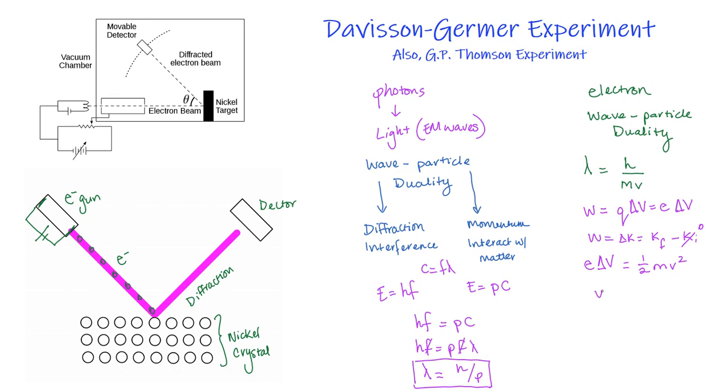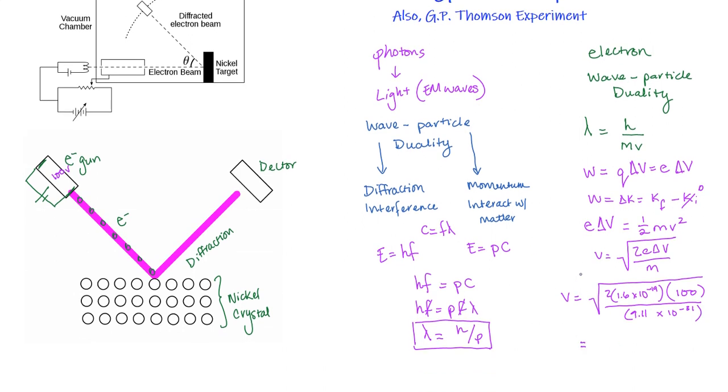That leaves us, if we solve for velocity, with root 2e delta v over m. So if I plug in these specific values for an electron, let's go ahead and do that really quickly here, we know that the electron's elementary charge is 1.6 times 10 to the negative 19th, and we're just looking at the magnitude of the charge here. Let's just make this voltage across here 100 volts. And then we're going to put the mass of the electron in, which is about 9.11 times 10 to the negative 31st, so extremely tiny, and the velocity that I calculate here is about 5.9 times 10 to the 6 meters per second.